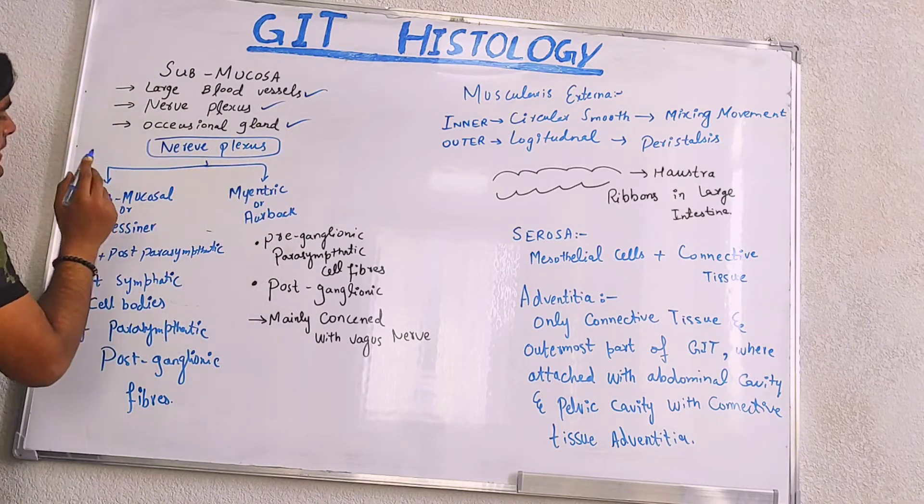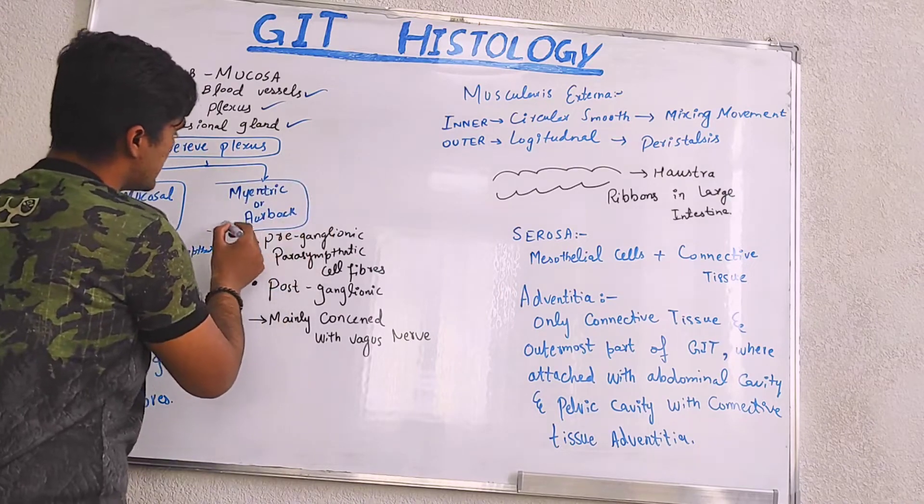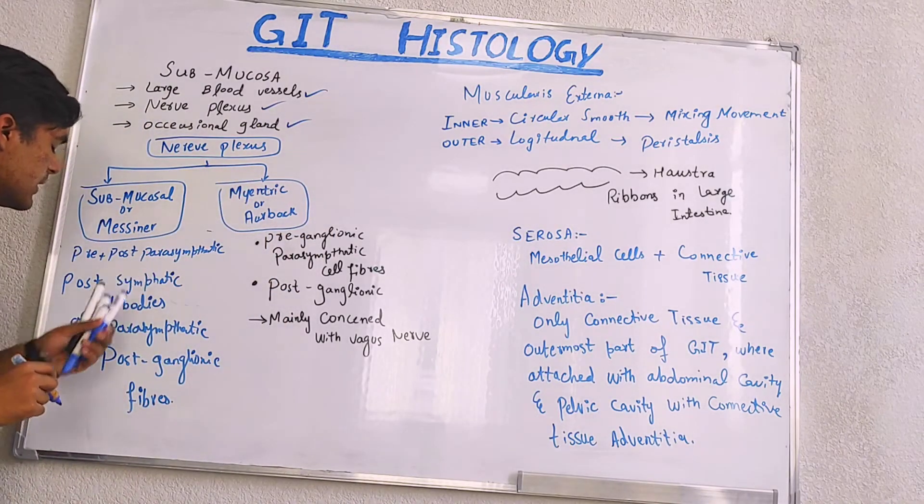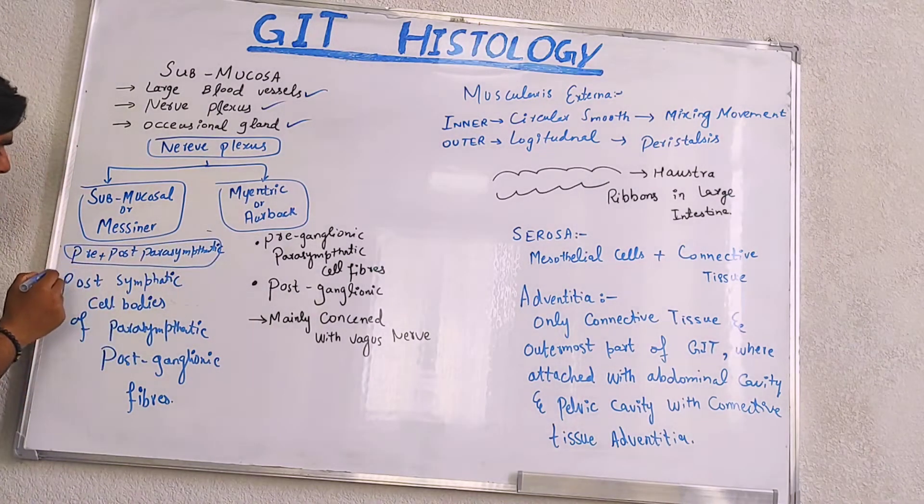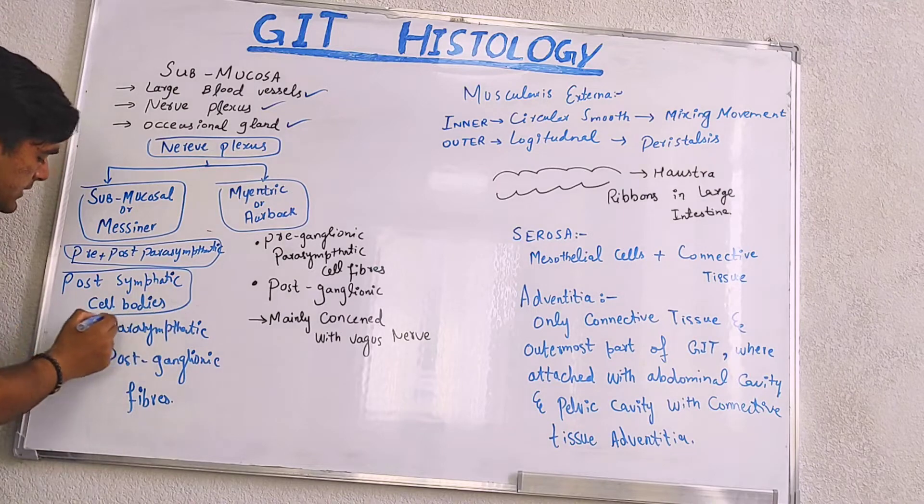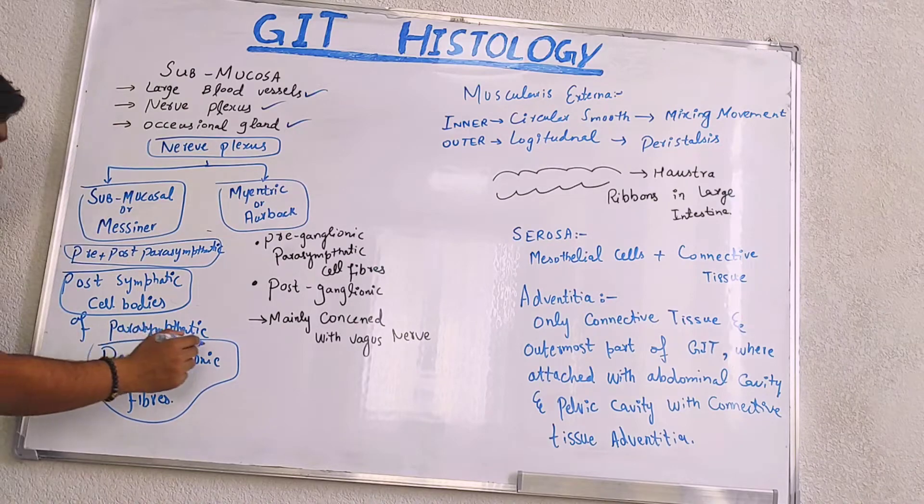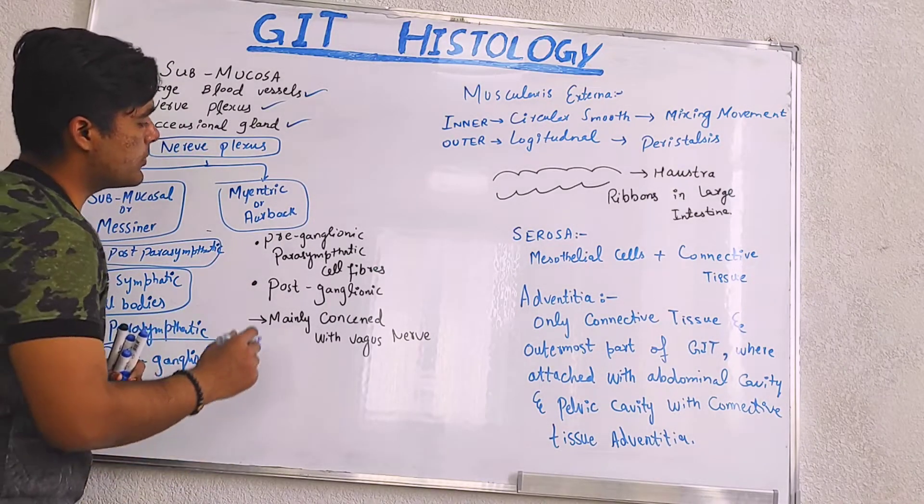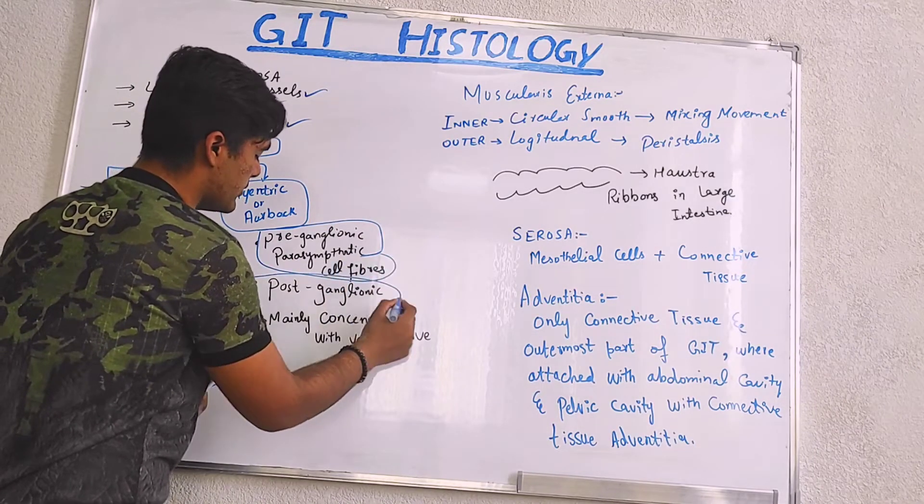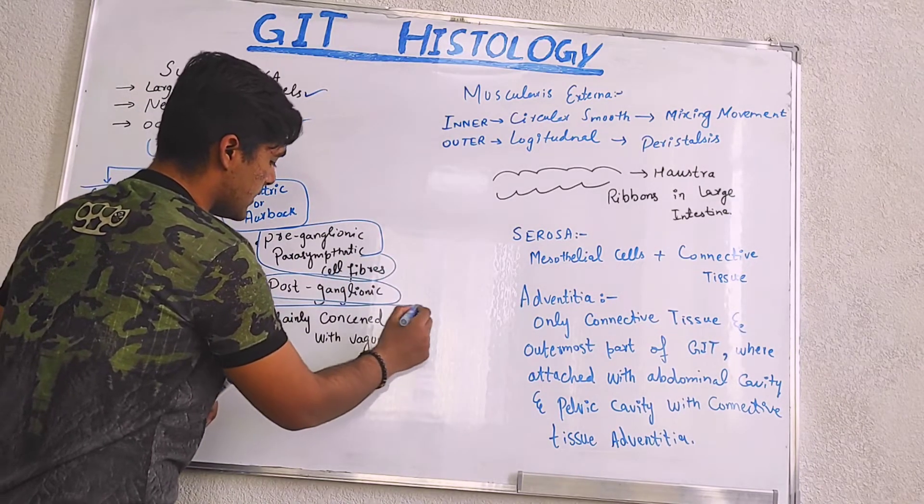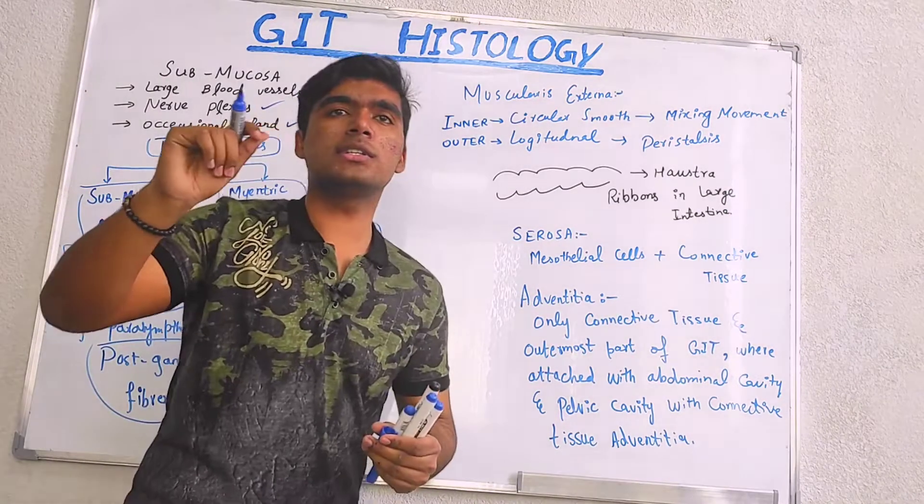Nerve plexus are basically of two types: submucosal or Meissner and myenteric or Auerbach. Talking about submucosal or Meissner, so it contains pre and post parasympathetic nerve fibers as well as post sympathetic cell bodies and post ganglionic fibers. And myenteric or Auerbach, it contains pre-ganglionic parasympathetic cell fibers, post-ganglionic, in the same way it contains supply that is mainly concerned with vagus nerves.